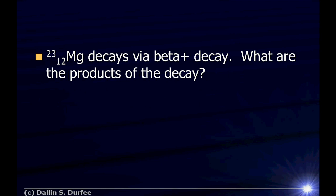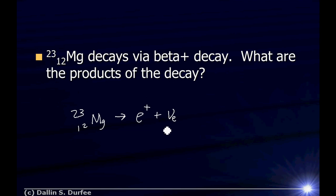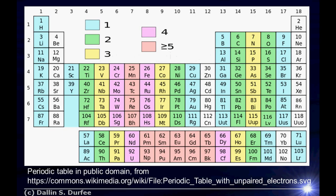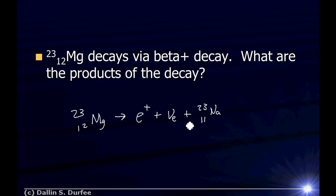We've done beta minus; let's do beta plus now. Magnesium-23 decays via beta plus decay — what are the products? I start with magnesium-23. Beta plus means I'm emitting a positron, a positive charged anti-electron. To preserve lepton number, I also have to emit an electron neutrino. I had positive charge come out of the nucleus, so I have less positive charge left — I must have converted one proton to a neutron. Same atomic mass number but one fewer proton: element 11 is sodium, so I'm left with a sodium-23 nucleus.